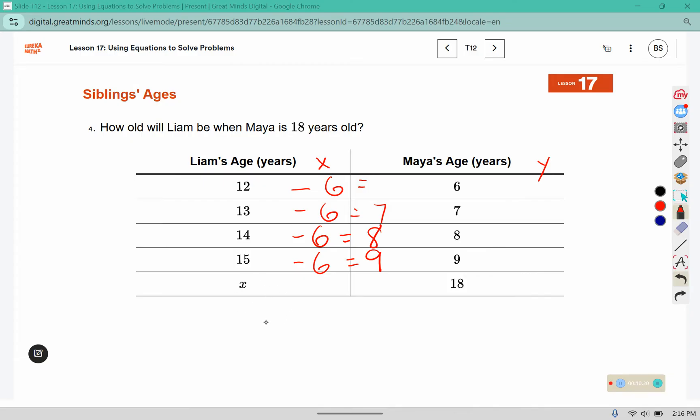So to solve for this x variable, we have the equation y is equal to the x value minus 6. So we know based on this table that the y value here is 18. So we're replacing that y with the number 18. To solve this equation, we would add 6 to both sides to find out what x is. Well, 18 plus 6 would give us 24. So when Maya is 18, Liam will be 24. So 6 years apart.